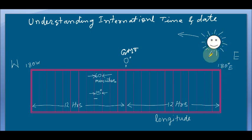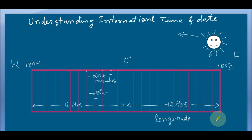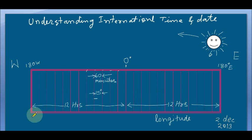Here I have shown the Sun. The reason I have shown it here is because the Sun rises in the east and sets in the west. That means it accounts for a 60-minute time difference — 60 minutes meaning one hour. So, for example, if it is 22nd December 2013, this point and that point will differ by 24 hours, meaning there will be a difference of one day.